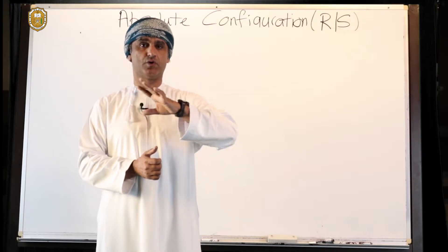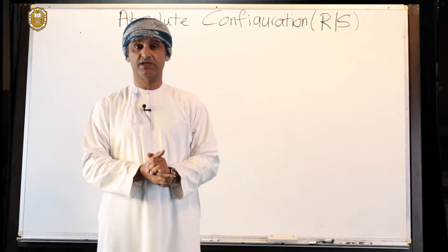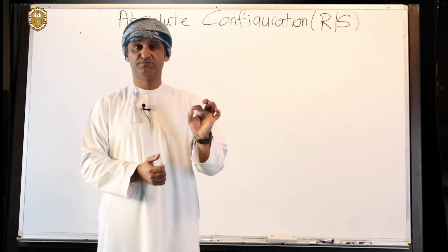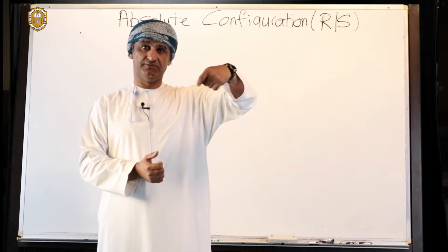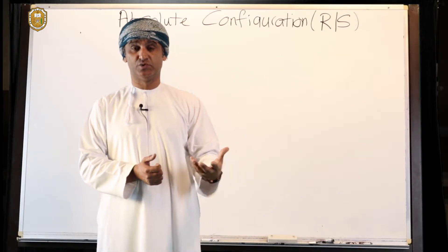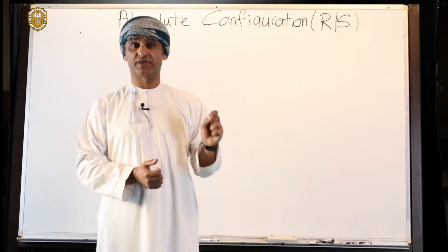So we assign them in the order four, three, two, one. The lowest priority group, which is number four, should be, if you like, placed at the back, or the molecule should be viewed so that the lowest priority group is at the rear or at the back.